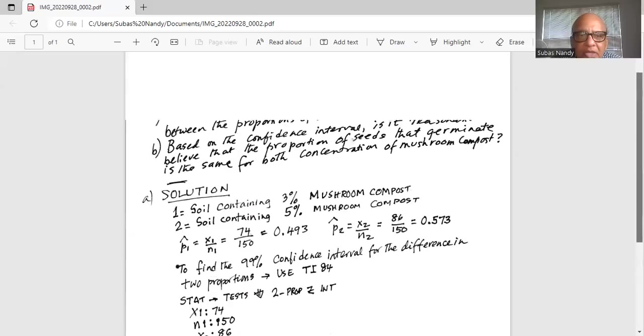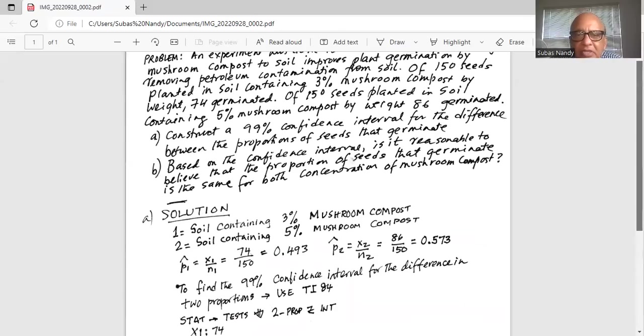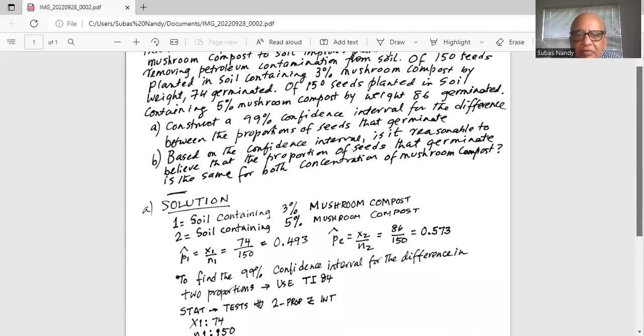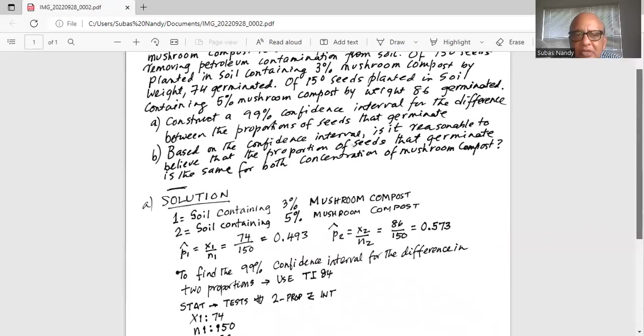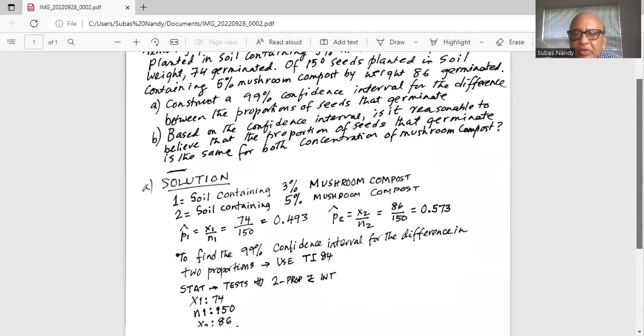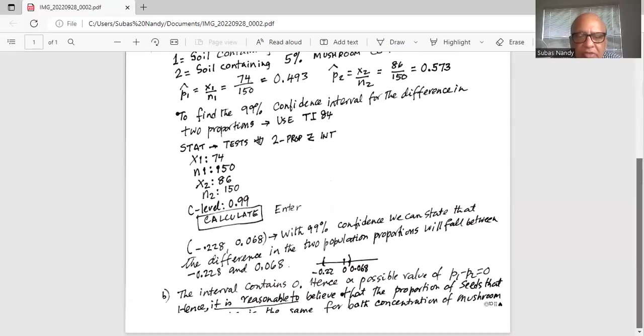Part B said based on the confidence interval, is it reasonable to believe that the proportion of seeds that germinate is the same for both concentrations of mushroom compost?